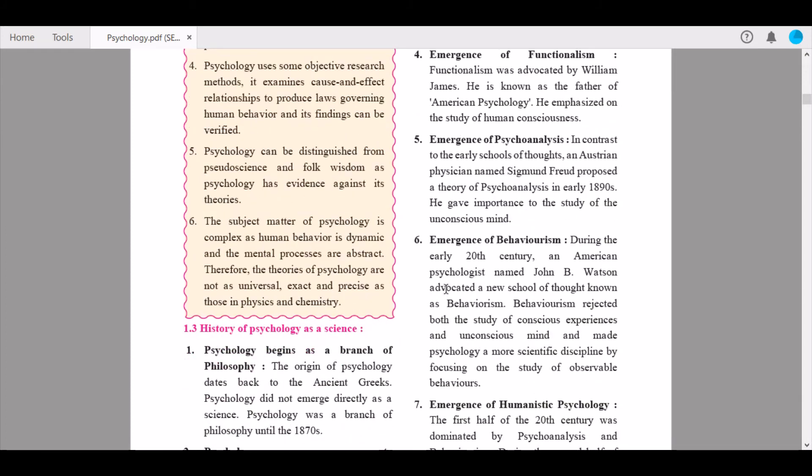Sixth is emergence of behaviorism. During the early 20th century, American psychologist John B. Watson advocated a new school of thought known as behaviorism. Behaviorism rejected both the study of conscious experiences and unconscious mind, and made psychology more scientific by focusing on the study of observable behaviors. This was seen as people trusted what they could observe and not what runs in a person's mind.